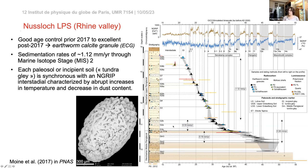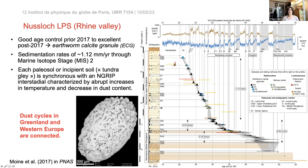We had observed in the field all of these small units called tundra glay units. Each can be correlated temporally to Dansgaard-Oeschger events in the NGRIP record because of the age model. The blue curve on top is the dust in the Greenland ice core. This site is a really nice example that the dust cycle seen in Greenland and the dust deposits in Western Europe are connected.